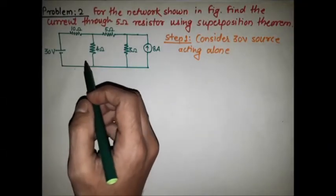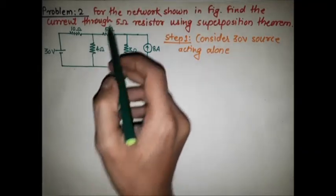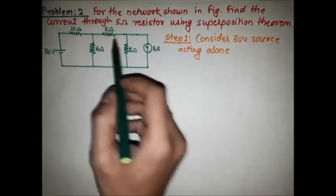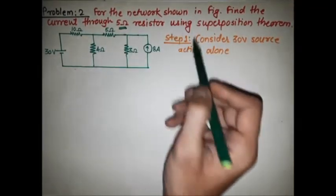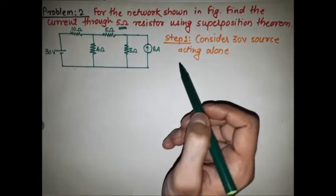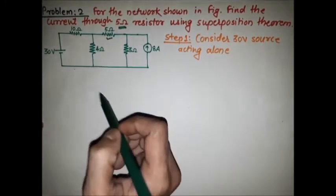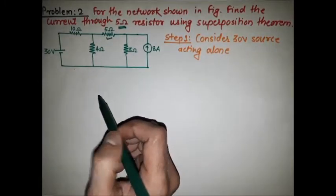The second problem is based on the superposition theorem. For the network shown in the figure, find the current through a 5 ohm resistor using the superposition theorem. That means we have to find the current through this 5 ohm resistor.